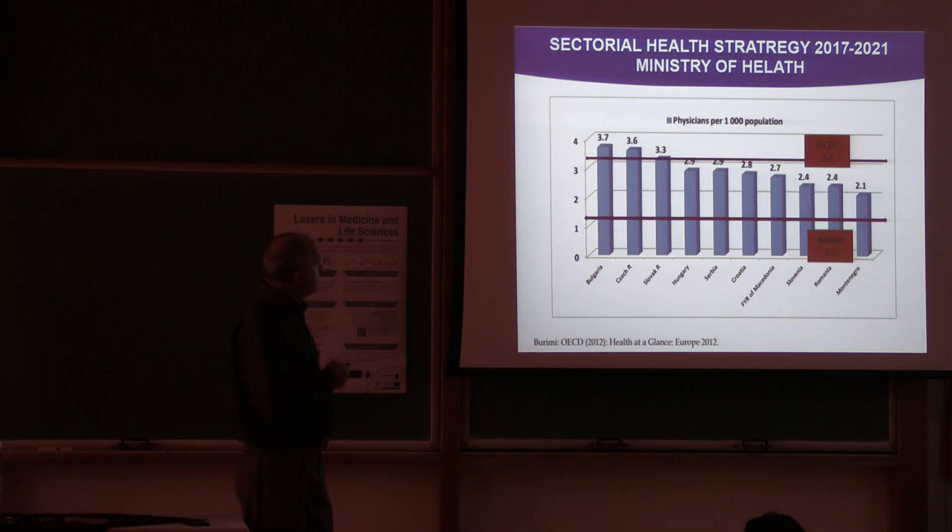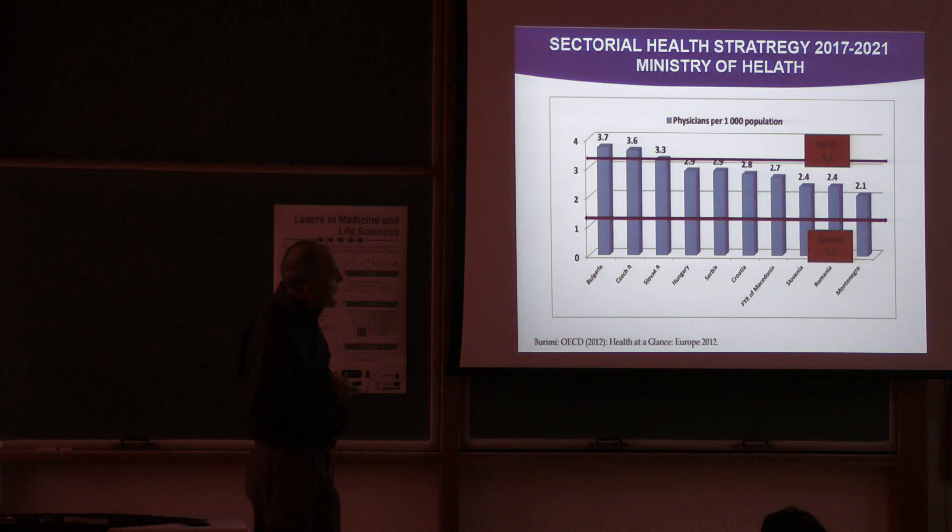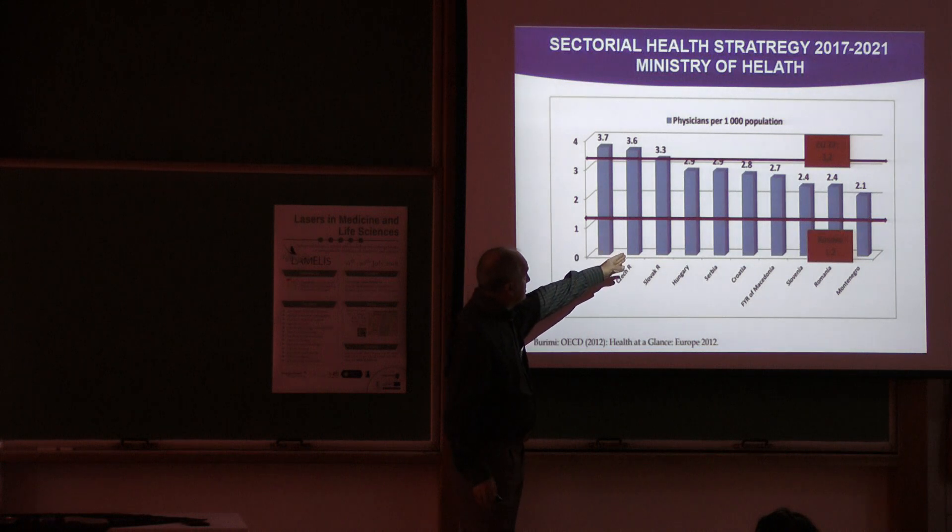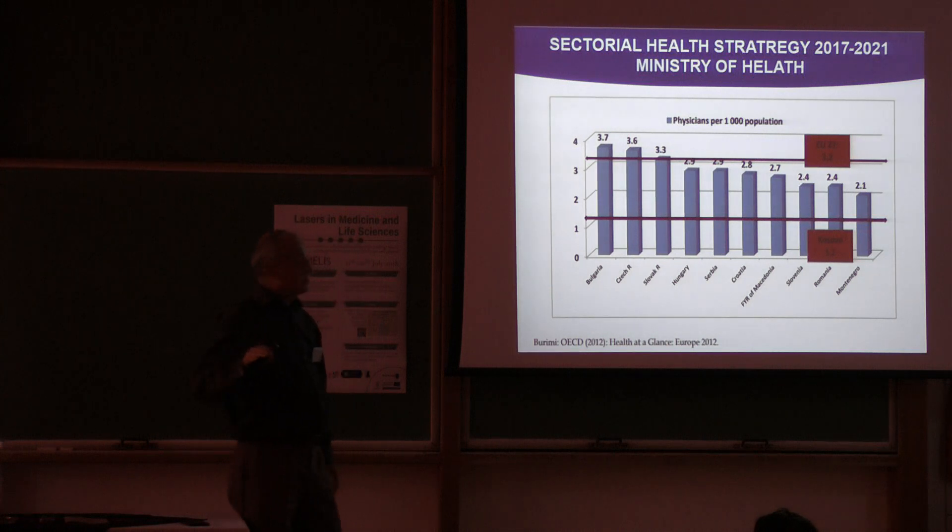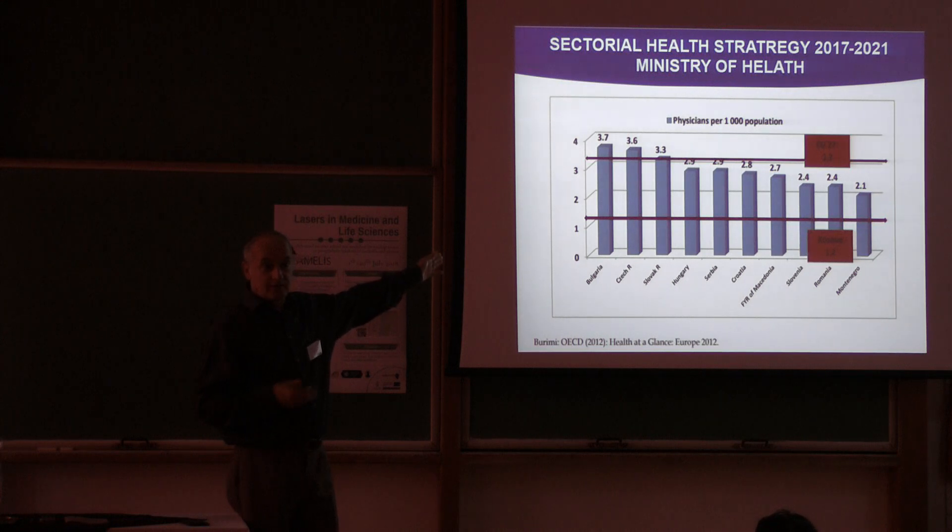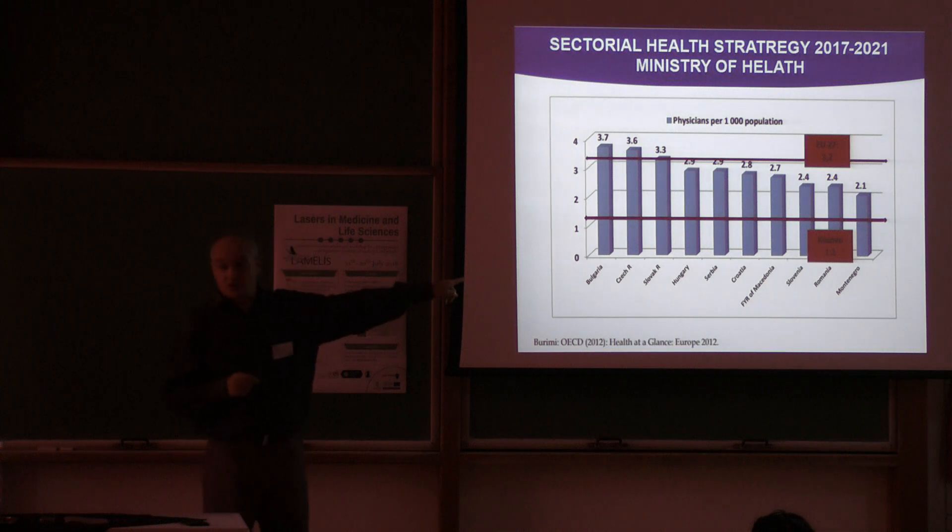In addition to the previous chart, this shows the source as well. In Kosovo we have 1.2 healthcare professionals per 1,000 population. Different countries like Bulgaria 3.7, Czech Republic 3.6 and so on, all the way to Montenegro which has 2.1. The average in the EU is 3.2, which gives you the indication that if you want to get sick, go to Bulgaria. The possibility and probability to get a healthcare provider very quickly is quite high in Bulgaria. In Kosovo you may struggle to find one.